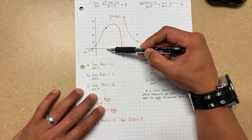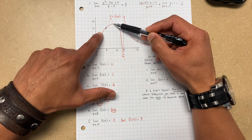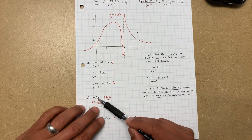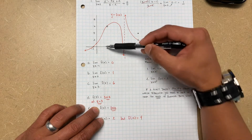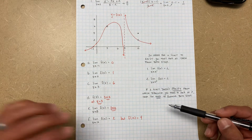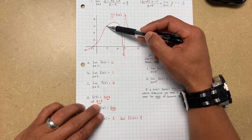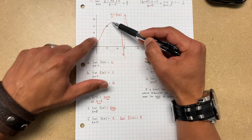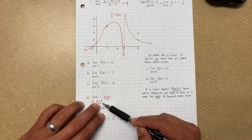What about part C: the limit as X approaches 3 of f(X)? X equals 3 is right here. From the left and from the right, what is it approaching? It's approaching a Y value of 6. Now what about f(3)? At exactly X equals 3, there's nothing there — it's empty, it's missing. So the limit does exist and equals 6, but f(3) does not exist.